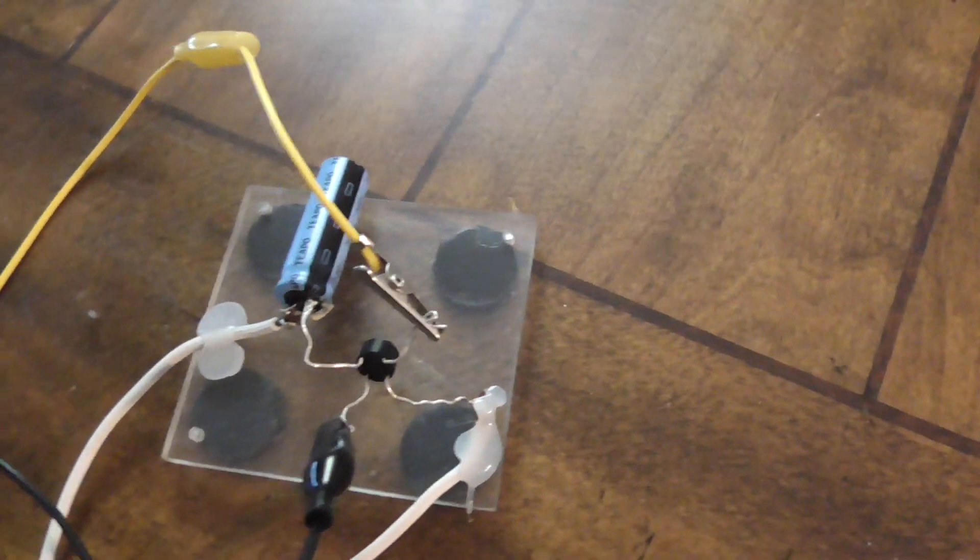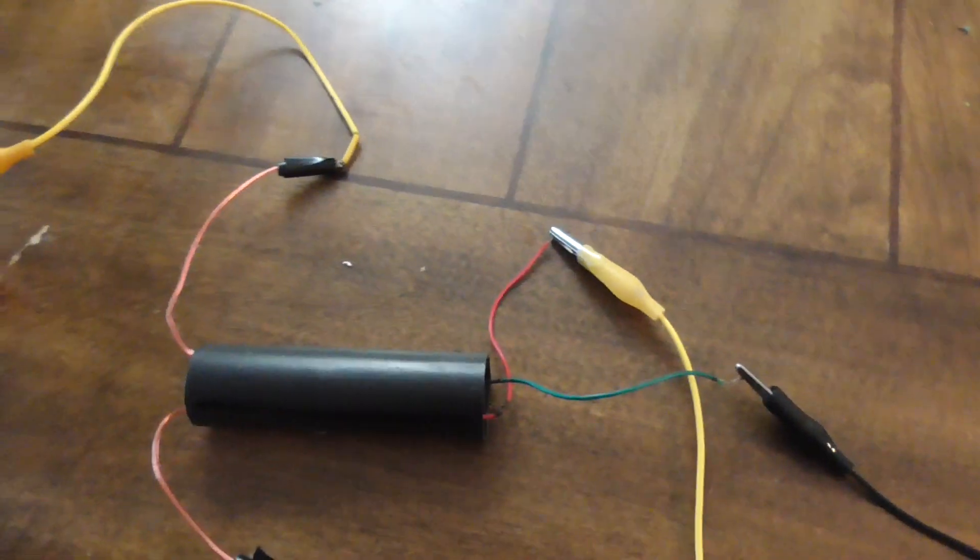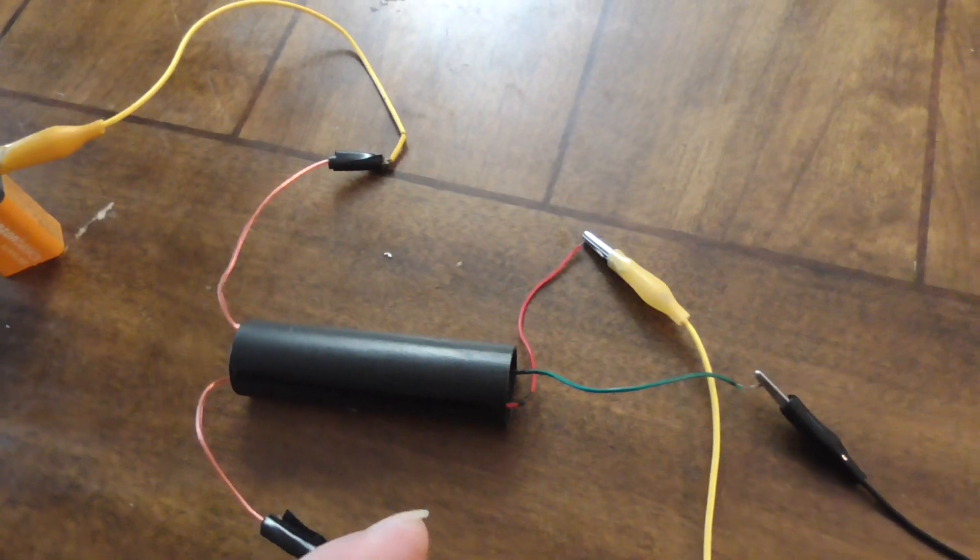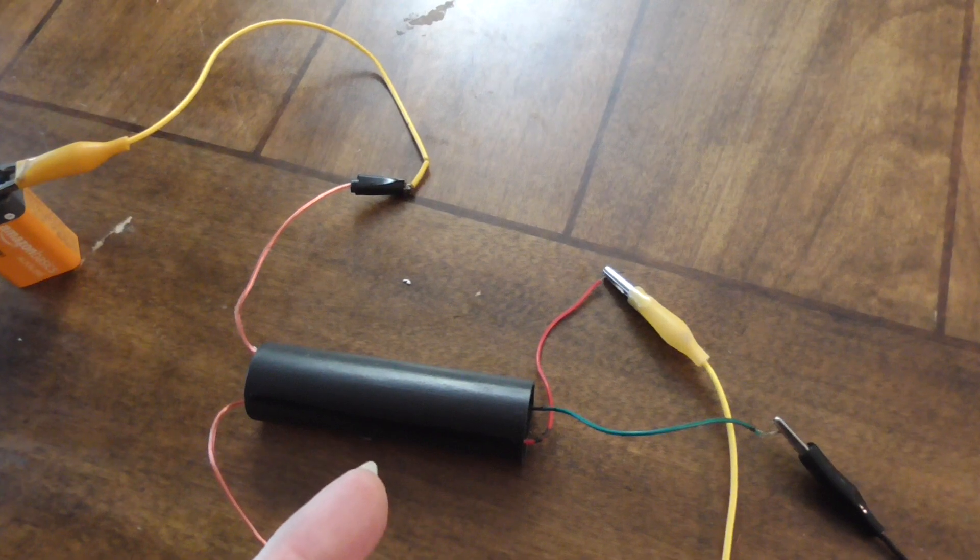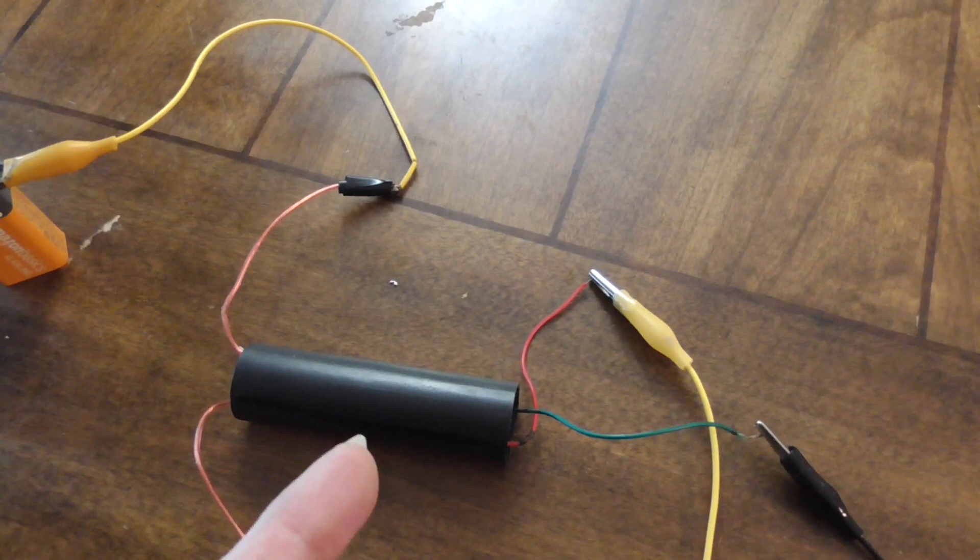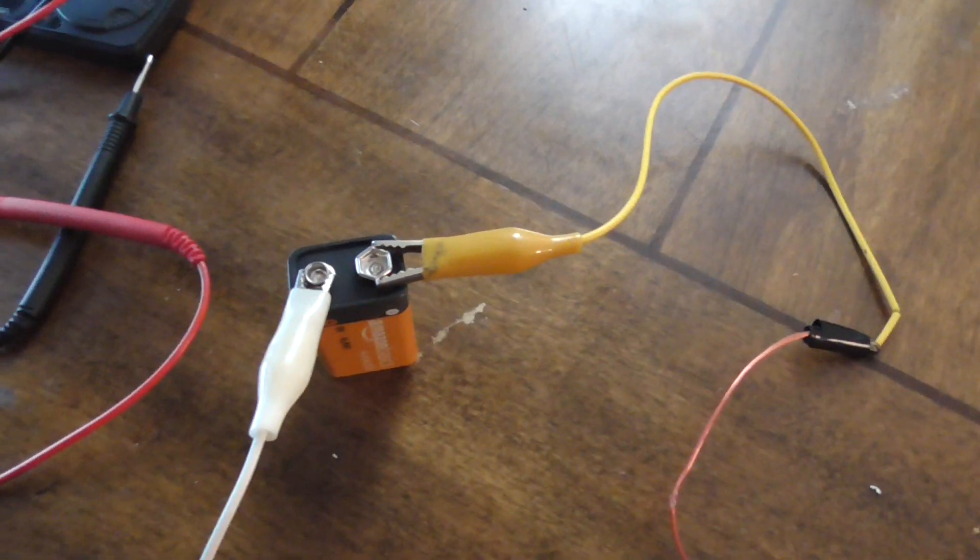We just filter out the negative side. Then the output goes into basically a cap dump circuit. It triggers an oscillator, which charges a high voltage cap and discharges it at every 36 volts into this battery here, which is just a normal nine volt dead battery.